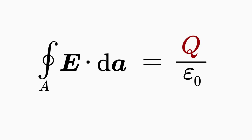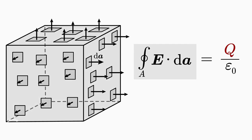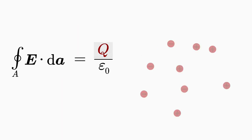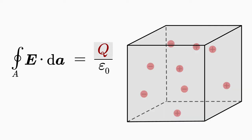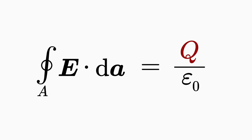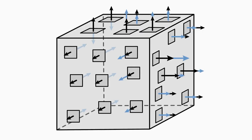Now, this is the first Maxwell equation in integral form. The left-hand side is a surface integral in which the electric field E occurs. This integral measures how much of the electric field comes out of or enters the surface A — it represents the electric flux through the surface A. On the right-hand side is the total charge Q enclosed by the surface A, divided by the electric field constant ε₀, which provides the correct unit. The first Maxwell equation states that the electric flux Φ through a closed surface A corresponds to the electric charge Q enclosed by the surface.